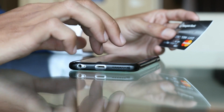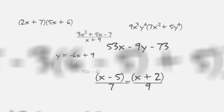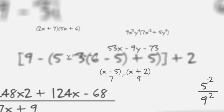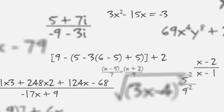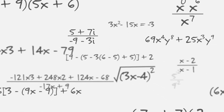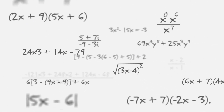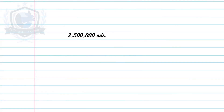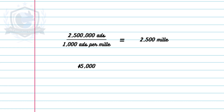Let's indulge in a bit of arithmetic, shall we? If you were to spend $5,000 on 2.5 million digital ads, how many of these grandiose milles have you acquired? Simple division reveals that 2.5 million ads divided by a thousand gives you 2,500 milles, and if you've parted with $5,000 for these 2,500 milles, a bit more division tells us that you've spent a mere $2 for each mille. Ah, the joys of large numbers.